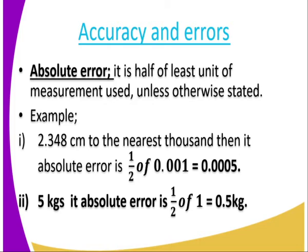The absolute error is half of the least unit of measurement used, unless otherwise stated. So you must identify the least unit. For example, we have 2.348 centimeters, to the nearest thousandth. The absolute error: we take the last unit, which is the thousandth, and take half of 0.001, which gives us 0.0005. That is the absolute error.